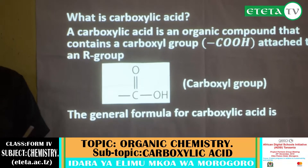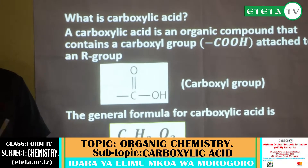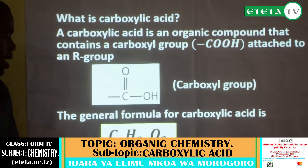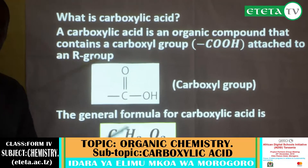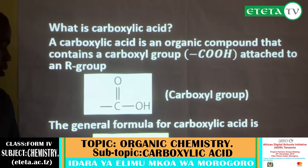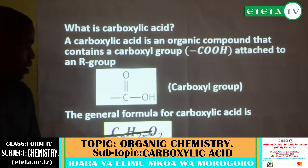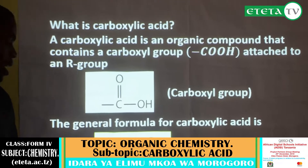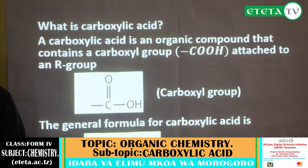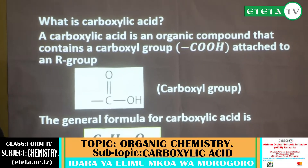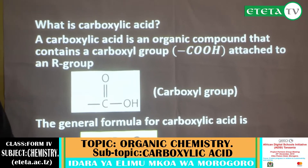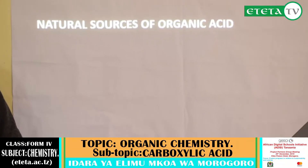Now the general formula for carboxylic acid is CnH2nO2, where C represents carbon, H represents hydrogen, O represents oxygen, and N represents the number of carbon atoms. This is the general formula for carboxylic acid.